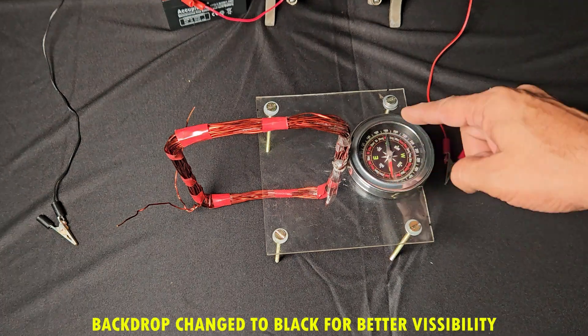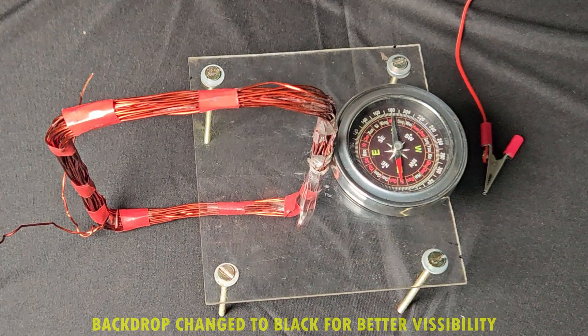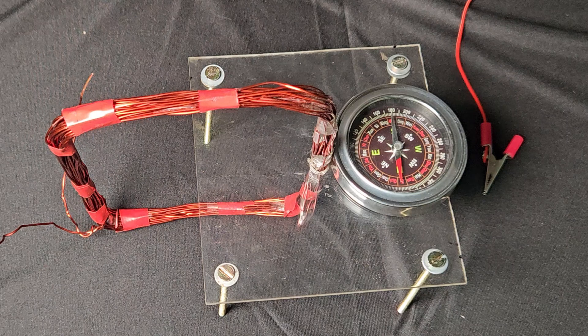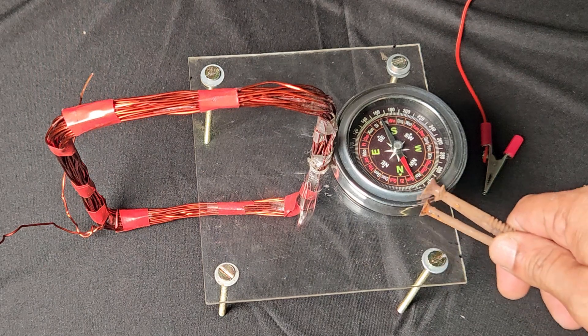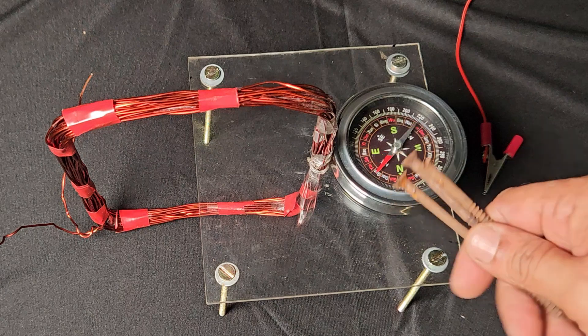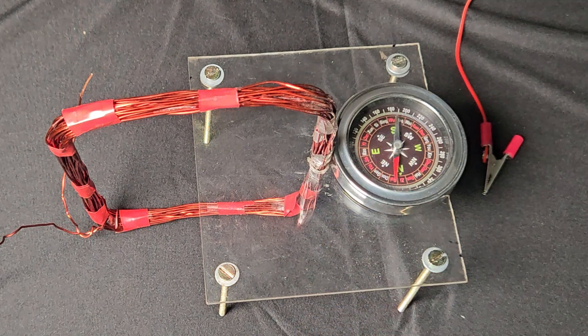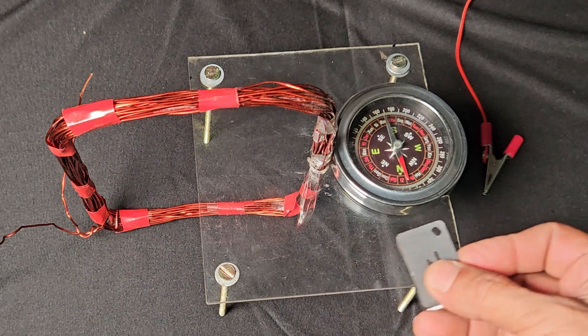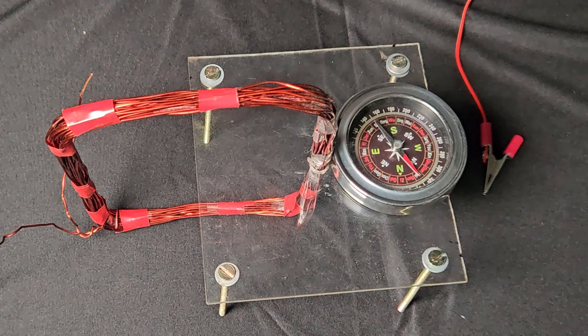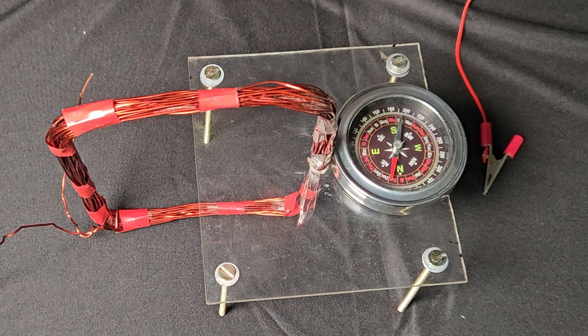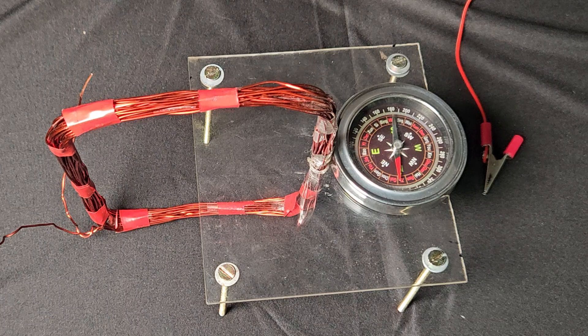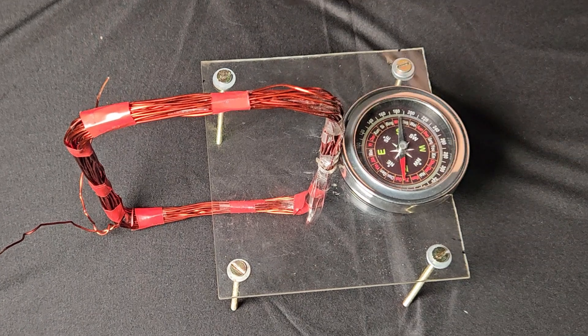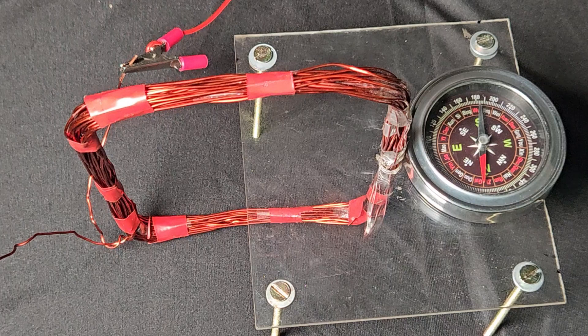If undisturbed, this magnetic needle always aligns in earth's north-south direction. Like now, the red side of the needle points to north. It will get disturbed only if I bring another magnetic material near to it like this iron nails. This iron is magnetic material or I bring another magnet near to it. See that? So if the magnetic needle moves from its position, it's an evidence that a magnetic field is produced somewhere near it. So now let me connect the power source to the coil and watch the behavior of the magnetic needle.